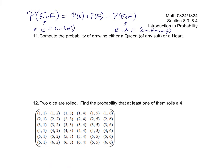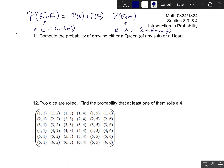So let's go on to problem 11. I'm going to start using our colloquial reading of E union F as E or F, and E intersect F as E and F — in other words, their intersection.